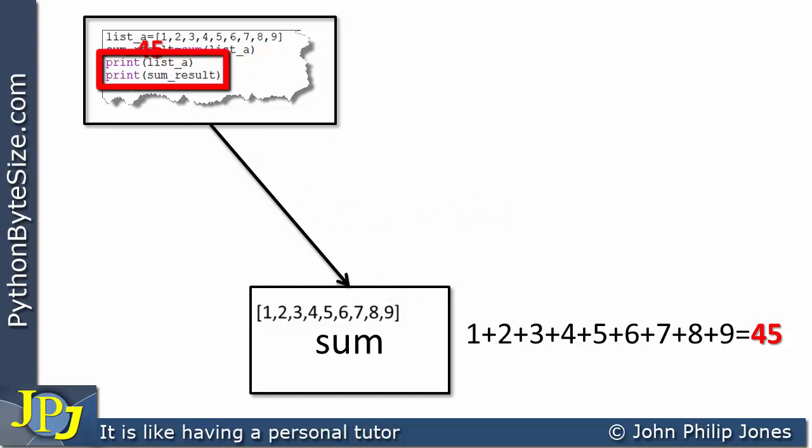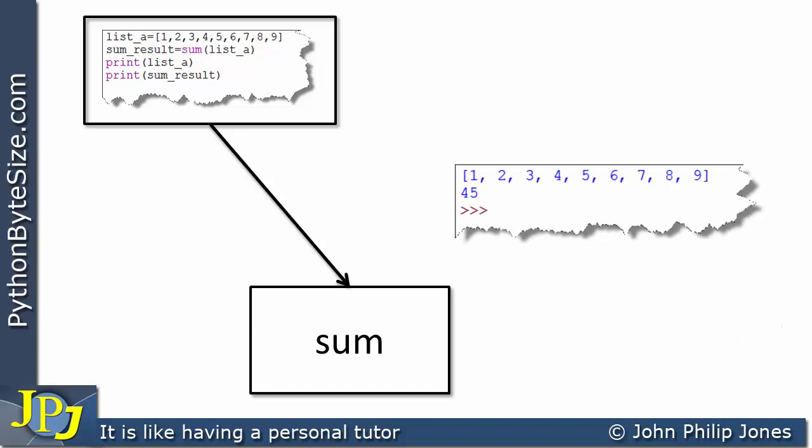These two lines will print out the list and the result returned. If we now consider what we will see at the program output, we're going to see this, and you can see that this line has printed the list, and this line has printed sum_result, which is the 45. The program will end.